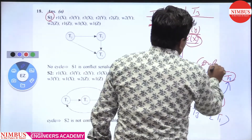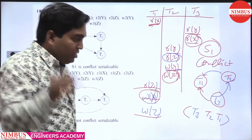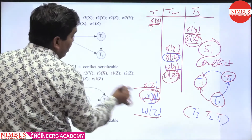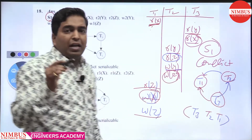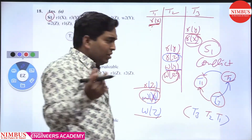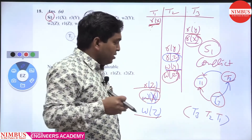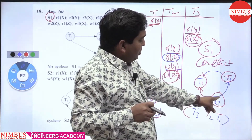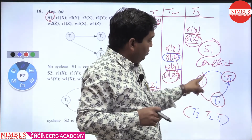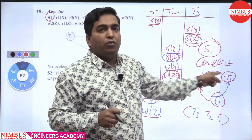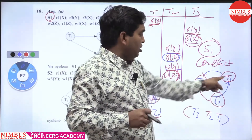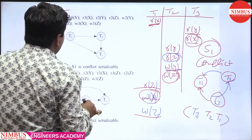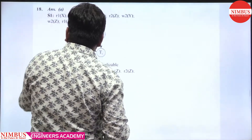So S1 is conflict serializable. There is no cycle and the serialization order is T3, T2, T1. The serializability order is determined by topological sorting. Topological sort starts from the node with in-degree 0 — that is T3. From T3 we go to T2, then T2 to T1. So the order is T3 → T2 → T1. S1 is conflict serializable with order T3, T2, T1. Now let's check S2.